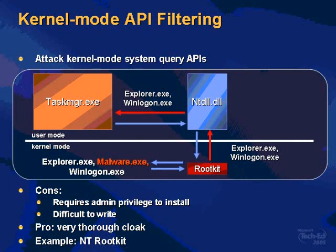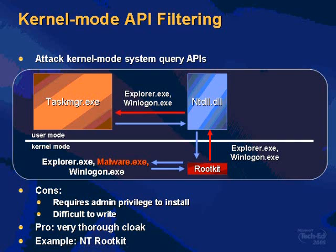Kernel mode API filtering is the next level of sophistication. The rootkit lives in kernel mode as a device driver, manipulating the core kernel APIs that Task Manager and other user mode programs ultimately depend on for their view of the system. Task Manager calls into NTDLL, gets the list, but the rootkit is down in the kernel intercepting and modifying the list on the way back up. This creates an extremely thorough cloak — even going to the kernel mode APIs directly, you can't see the malicious program. The con is it requires admin privilege to install a device driver and is very difficult to write without crashing the machine. An example on rootkit.com is NTrootkit, developed by the author of rootkit.com.